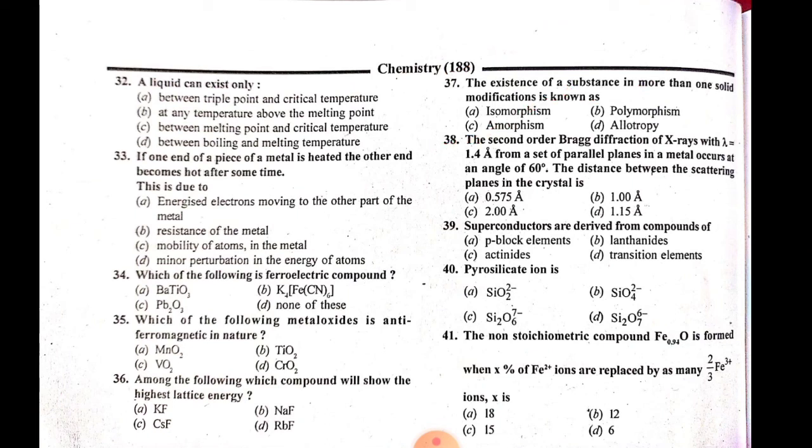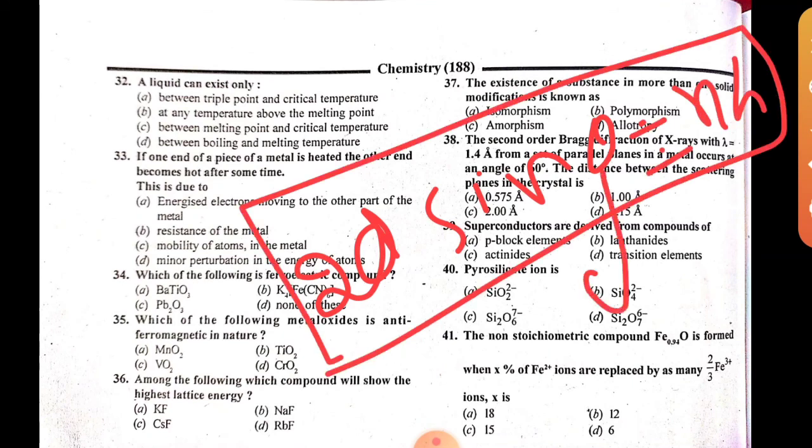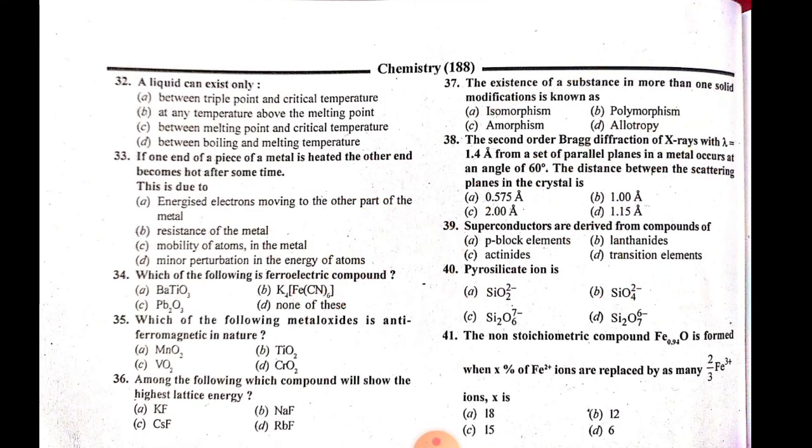Question 38: The second order Bragg diffraction. We have Bragg's formula: 2d sin θ = nλ, where θ is the angle, λ is wavelength. For second order, put n=2 and calculate d. Using the formula 2d sin θ = nλ, the answer comes out to 1.15 angstrom, which is 10 to the power minus 10.